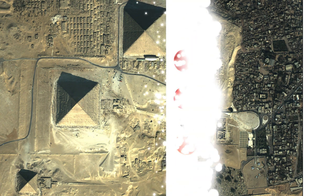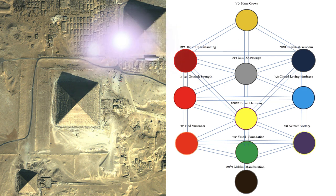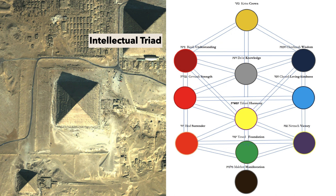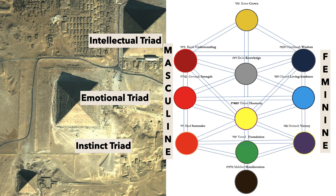So this is what's revealed at Giza — the Tree of Life. Understanding, knowledge, and wisdom — Chokhmah, Binah. That's the intellectual triad. The emotional triad — the three middle ones: harmony, strength, loving kindness. And the instinctual triad — notice the three pyramids here in these three levels: surrender, foundation, victory. It's also divided left and right into masculine — the yang — and the feminine — the yin. The middle pillar is more neutral, the combination, the virtuous relationship of these qualities.